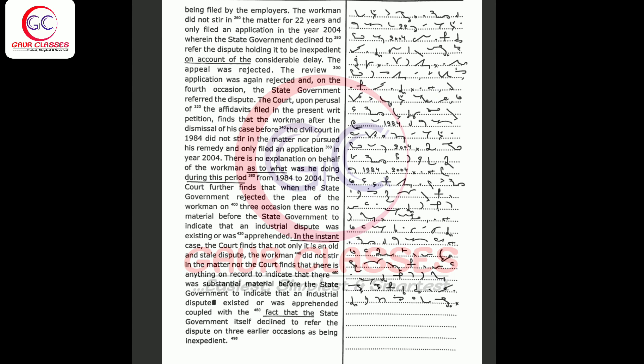In the instant case, the Court finds that not only it is an old and stale dispute, the workmen did not steer in the matter nor does the Court find that there is anything on record to indicate that there was substantial material before the State Government to indicate that an industrial dispute existed or was apprehended, coupled with the fact that the State Government itself declined to refer the dispute on three earlier occasions as being inexpedient.